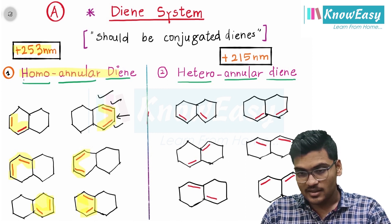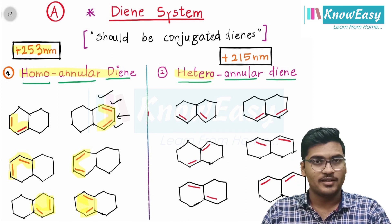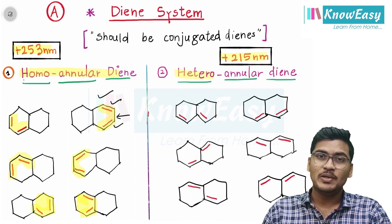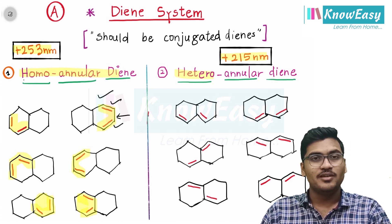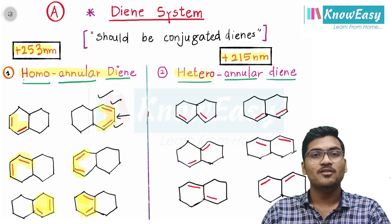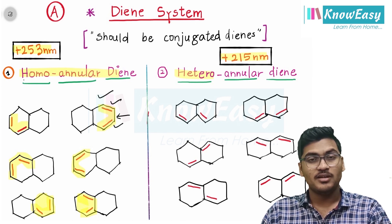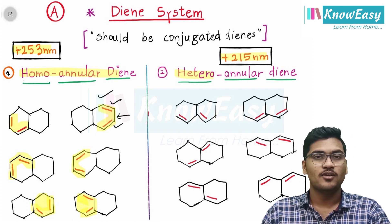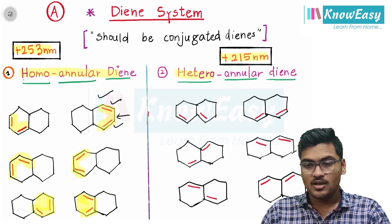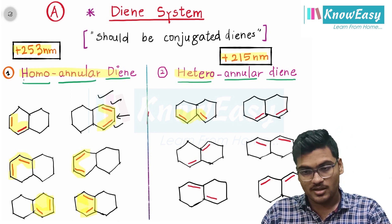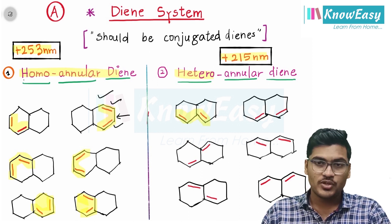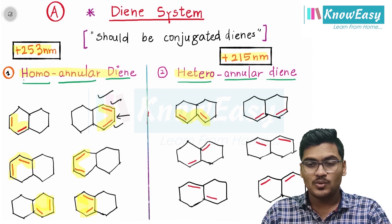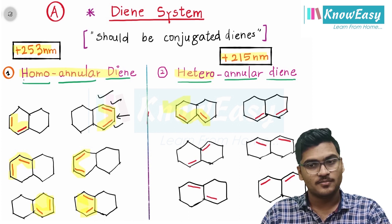Now let's take some examples of heteroannular dienes — the value is 215 nanometers. Hetero means different; the dienes which are in conjugation but placed in different rings form a heteroannular system. So here double bond, single bond, double bond — the bonds are in conjugation but present in different rings, so this is a heteroannular diene.